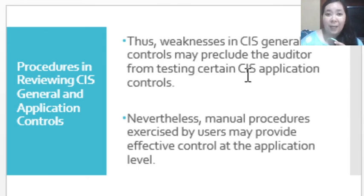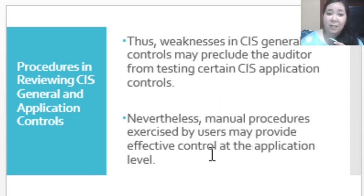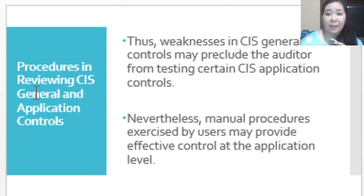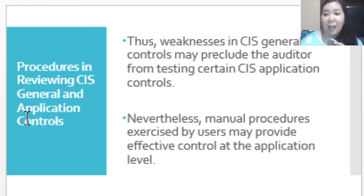Weaknesses in CIS general controls may preclude the auditor from testing certain CIS applications. Nevertheless, manual procedures exercised by users may provide effective control, depending on the auditor's assessment. In reviewing CIS general and application controls, it is very important that the auditor first understands the general controls, because the status of the general controls may also affect the application controls. That is how the auditor should proceed in understanding and reviewing these internal controls in the CIS activities of the entity.